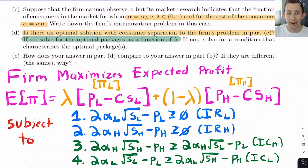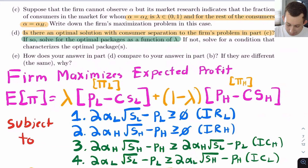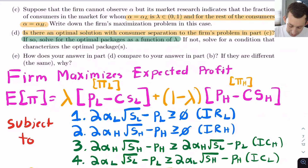Specifically, the IC constraint for the high type says: utility as a high type from the high-type package ≥ utility as a high type from the low-type package. Similarly, the IC constraint for the low type says: utility as a low type from the low-type package ≥ utility as a low type from the high-type package. That's all these constraints mean.